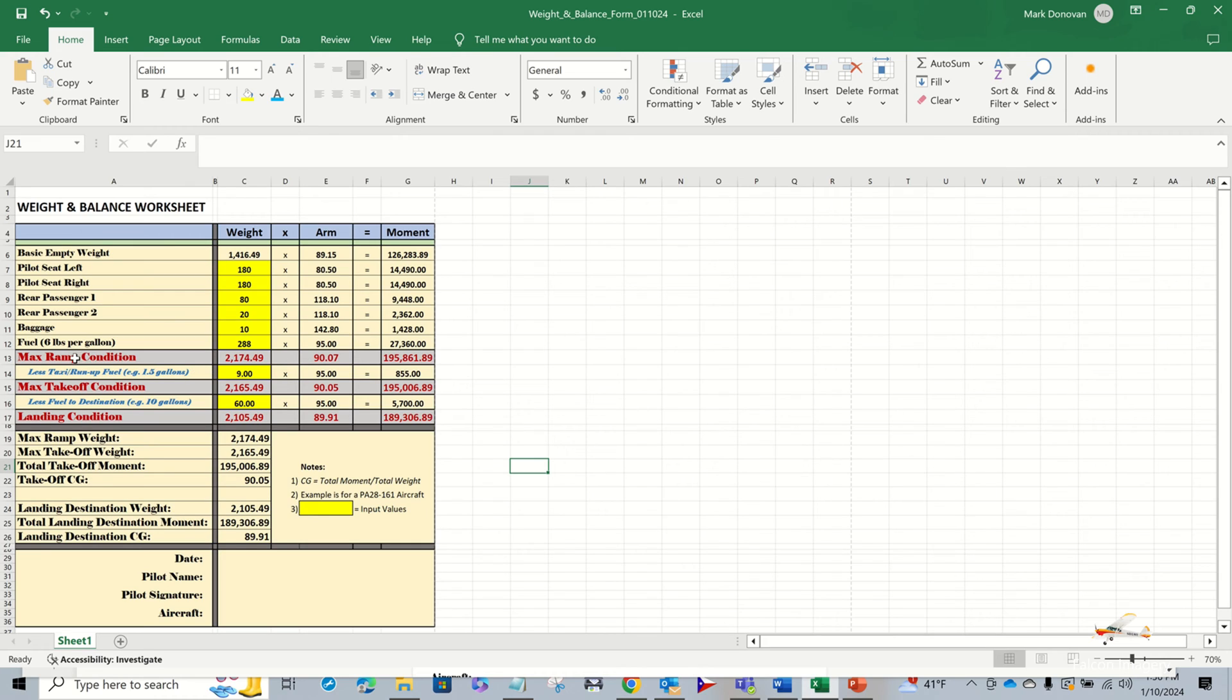So this first row here is the max ramp condition weight. Often aircraft have a max ramp weight versus a max takeoff weight. In the Piper Warrior, which is the example I've been using, the max ramp weight and takeoff weight are the same. The aircraft can takeoff at max ramp weight. However, to do a weight and balance properly, we also need to account for some fuel burn associated with starting up the aircraft, taxiing, and doing a run-up. On average, about a gallon and a half will be used, maybe a little bit less. But in this example, I'm using a gallon and a half.